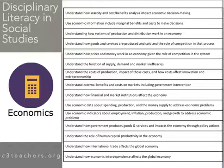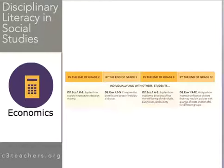The second summary indicator: use economic information, including marginal benefits and costs, to make decisions. Again, a concept — marginal benefits and costs — but this time note that the focus is more on what students do: using economic information. So we'll talk more about some of these tools as we go along, but we will again emphasize the concepts that are relevant within economics.